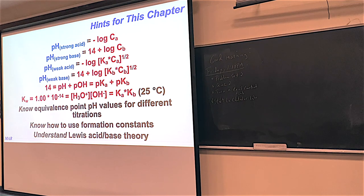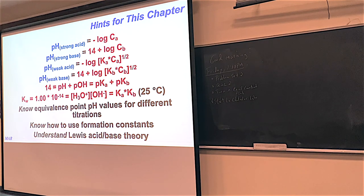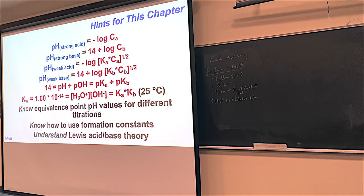These last two points are about Lewis acids and Lewis bases. A formation constant — Kf — has the complex ion as the product and whatever goes into it as reactants. We saw the copper-ammonia complex ion example. These Kf values are usually much greater than one, while Ka and Kb are usually less than one. Lewis acids just have a place for lone pairs, and a Lewis base has a lone pair to donate. Anything with a lone pair can potentially be a Lewis base; Lewis acids are usually transition metals or Group 3A twisted metals.